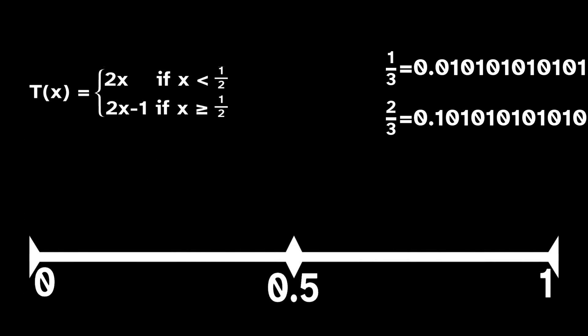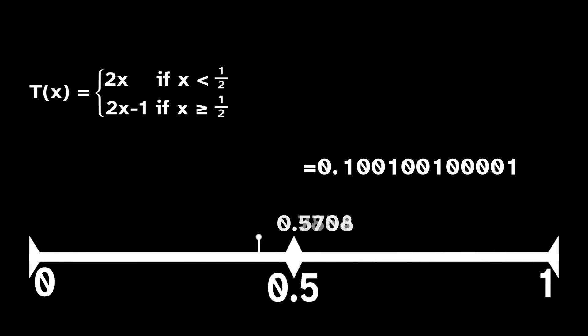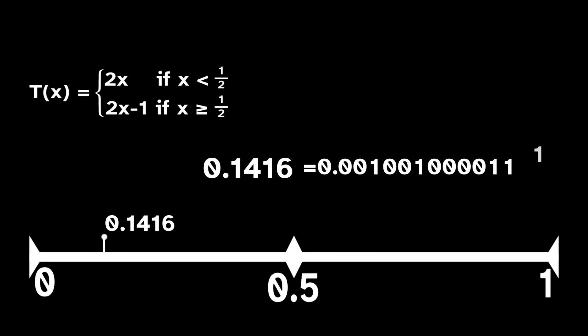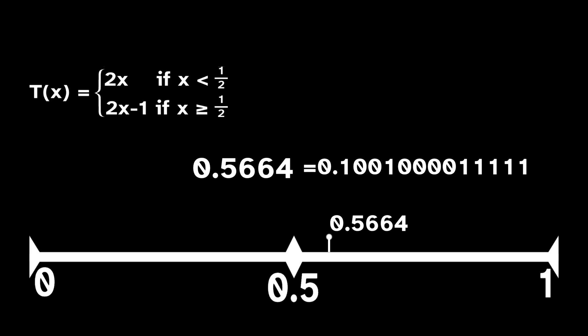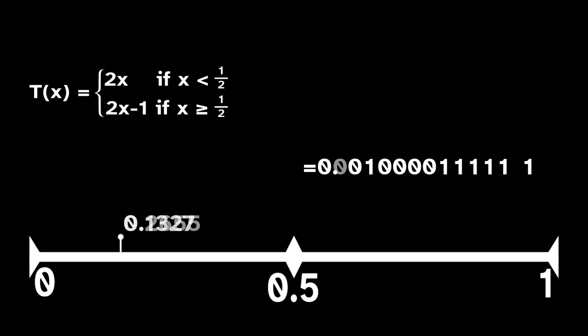We've seen an example of this already, as the baker's map system and the full shift on two symbols are conjugate. But the full shift on two symbols is easier to pick apart and analyze since it has a much simpler combinatorial setup.